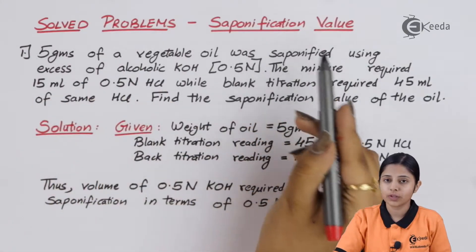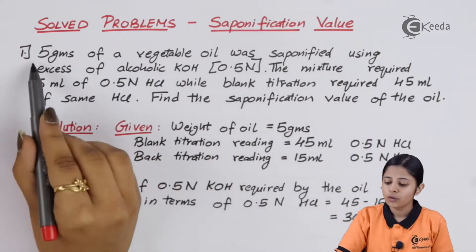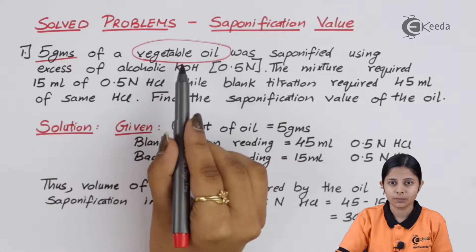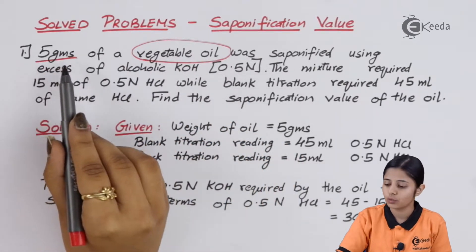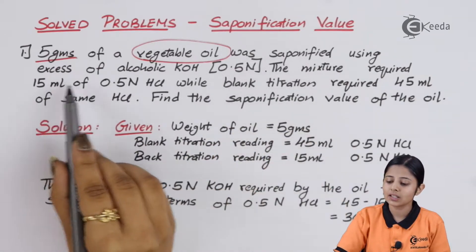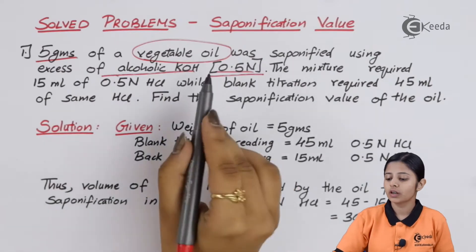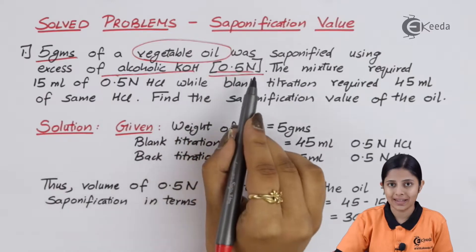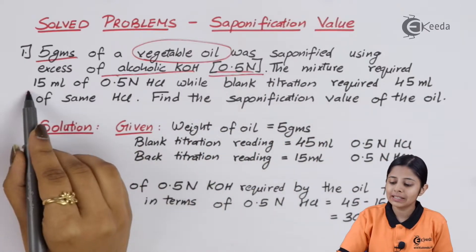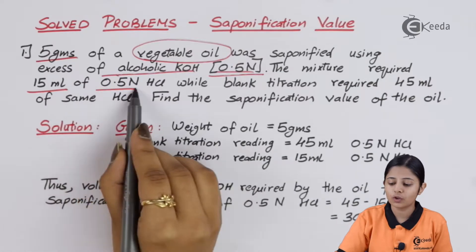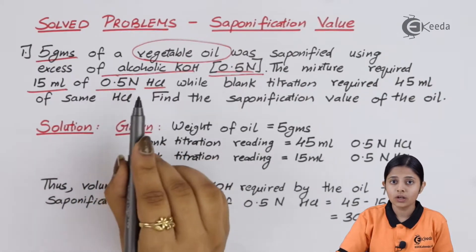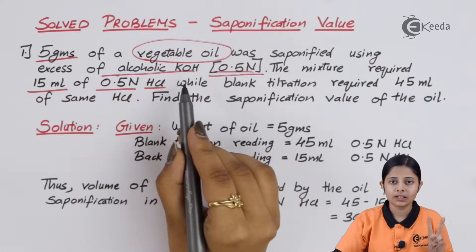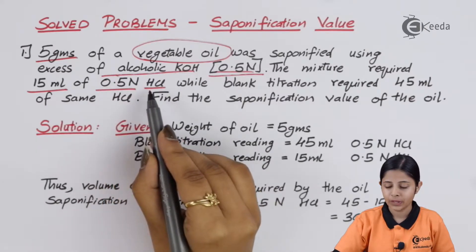Let's take the first problem. Five grams of vegetable oil was saponified using excess of alcoholic KOH. The normality of the alcoholic KOH is given as 0.5 N. The mixture required 15 ml of 0.5 normality HCl. So we have two normalities: 0.5 N KOH and 0.5 N HCl.